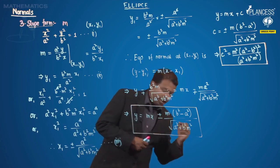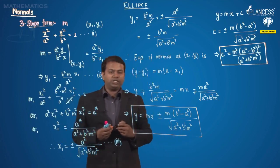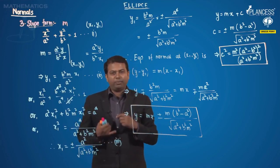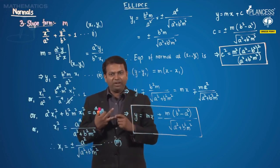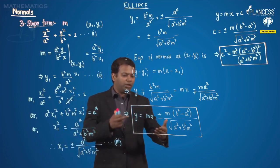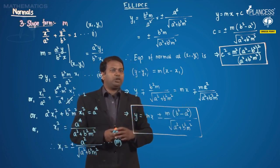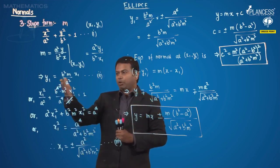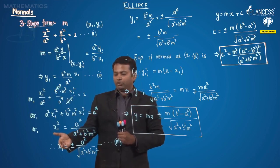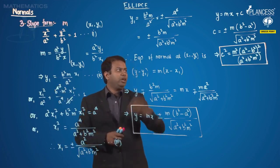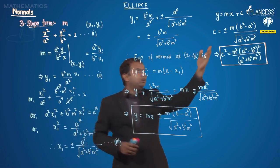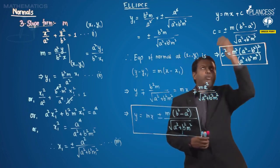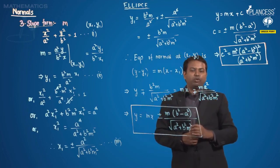That is all for normals. We have studied all three different forms: first the point form, then the parametric form, and now the slope form of the normal. We have also found the point of contact of the normal with the ellipse, given by (x1, y1), and calculated the values of both x1 and y1. If any line is given, you also know what the constant term in the equation must be when the coefficient of y is 1.